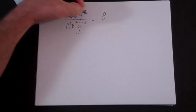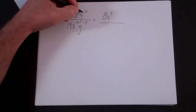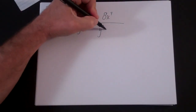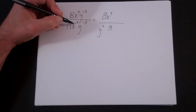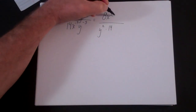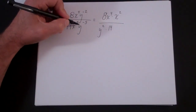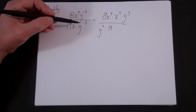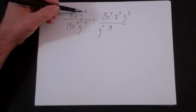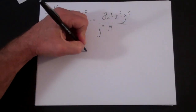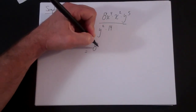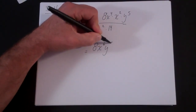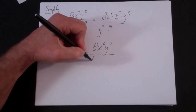So I'll rewrite this: 8 stays, x to the fourth is positive so it stays in the numerator, y to the negative 2 moves to the denominator. In the denominator: 14 stays, x to the negative 2 moves to the numerator, and y to the minus 5 also moves to the numerator since it's in the denominator. Once you move a term to where it belongs, it carries a positive exponent.